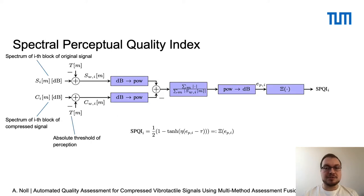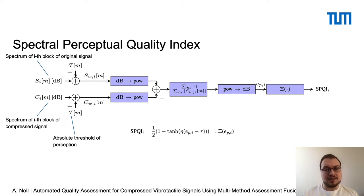Now we want to introduce our perceptual metric. We call it the Spectral Perceptual Quality Index, or SPQi. Here we first take signal blocks and compute the spectra of them. Then we subtract the absolute threshold of perception, so we get perceptually weighted spectra.